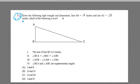Given the following right triangle and dimensions, line AB equals the square root of 9 inches, and line AC equals the square root of 25 inches, which of the following is true? It gives us a diagram, it gives us four statements. Statement 1: The size of line BC is 4 inches.